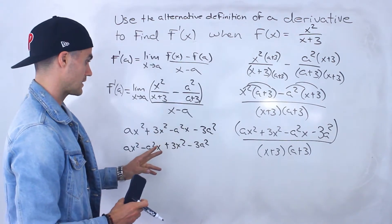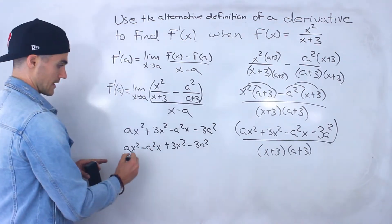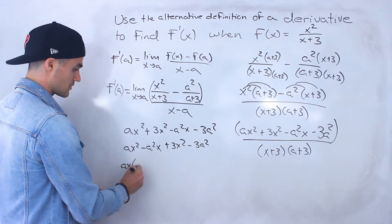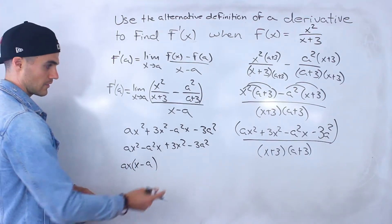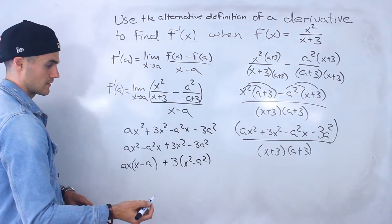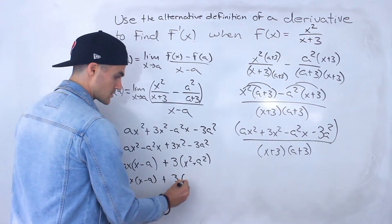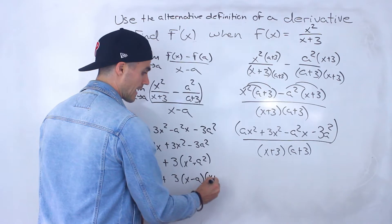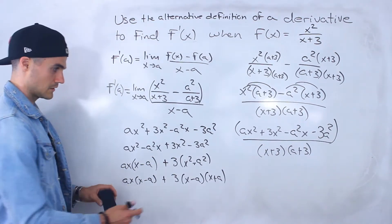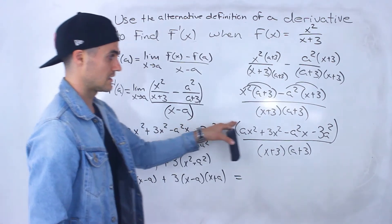I rearranged the expression by interchanging 3x squared and minus a squared x. From the first two terms we factor out ax, leaving x minus a. From the next two terms we factor out 3, leaving x squared minus a squared. That x squared minus a squared is a difference of squares, so it factors as 3 times x minus a times x plus a. Remember we're trying to get an x minus a in the numerator so it can cancel with the x minus a in the denominator.